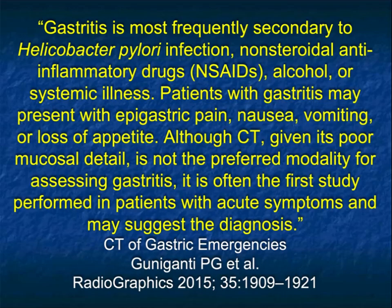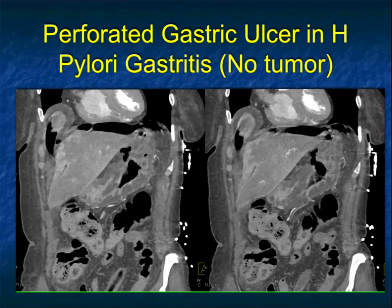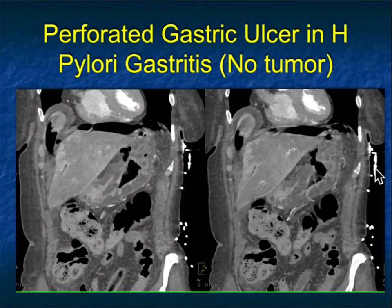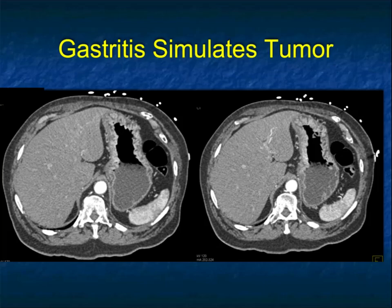Gastritis is most frequently associated with H. pylori infection, non-steroidal anti-inflammatory drugs, alcohol abuse, or systemic illness. Patients can present with acute symptoms like epigastric or abdominal pain, nausea and vomiting. In the acute setting, here's a beautiful example: diffuse thickening of the stomach wall, but you can see the pneumoperitoneum and the perforation — a perforated gastric ulcer with H. pylori gastritis. There was no tumor present, but you can see how markedly thickened the stomach is and why this patient will surely end up with endoscopy.